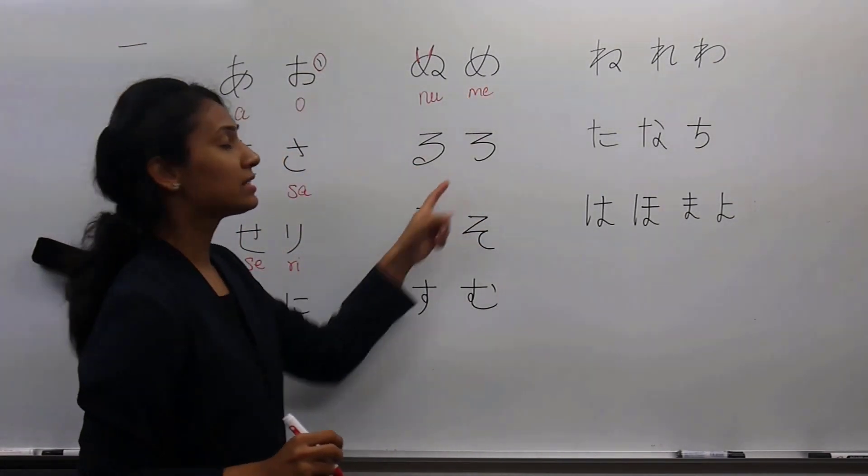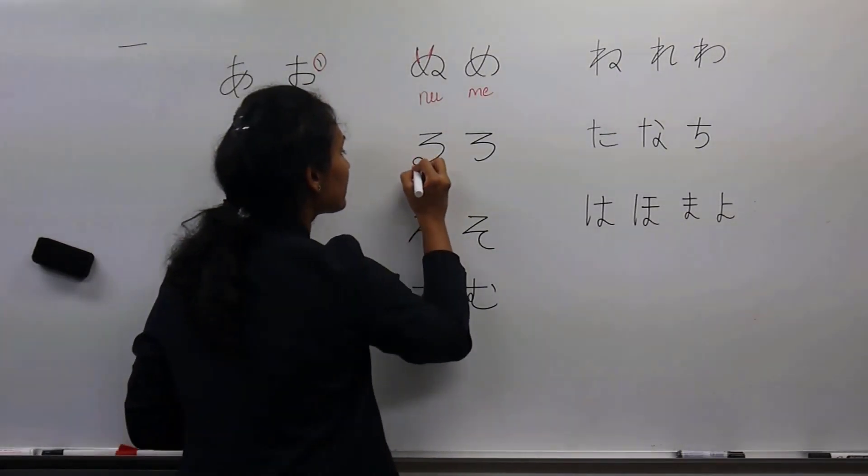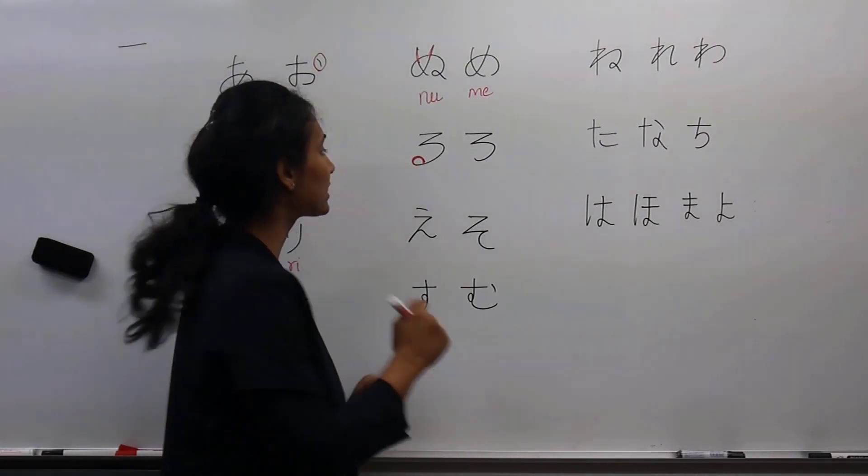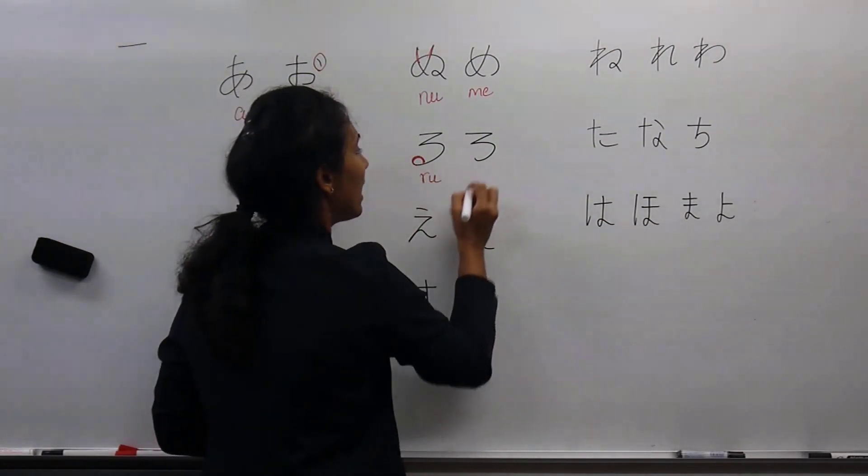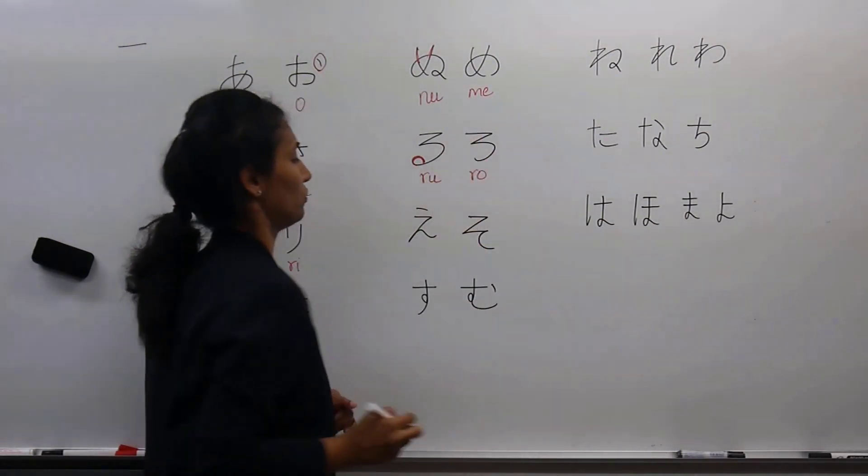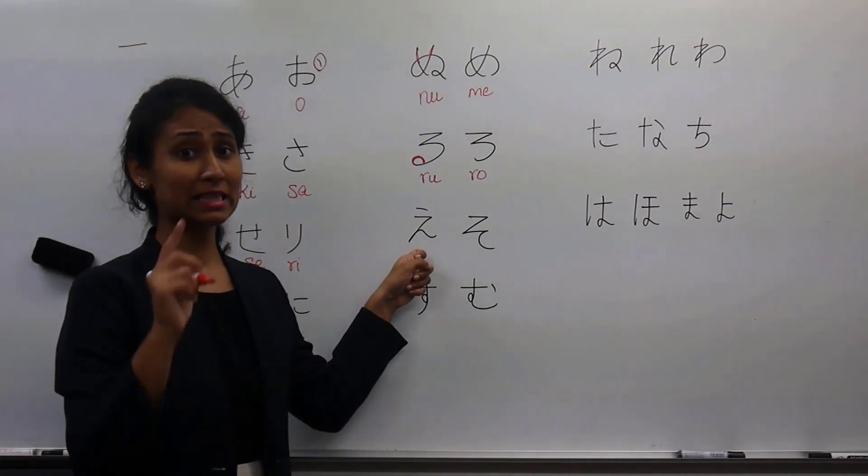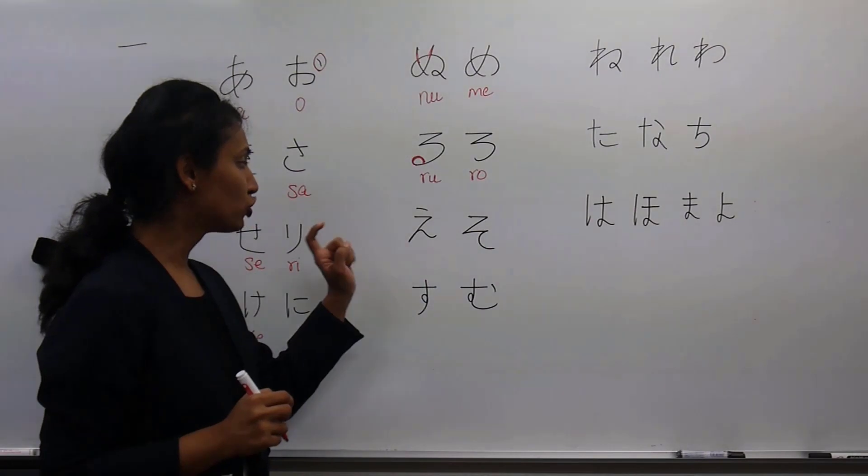This one is in the 'ra' series. If there is a curl here, it's like a 'u' hidden there, so this becomes 'ru.' And this is 'ro.'